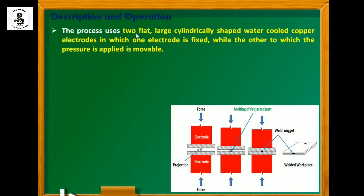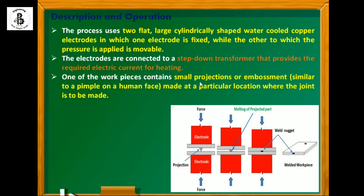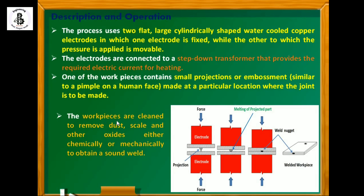The process uses two flat large cylindrical water-cooled copper electrodes, in which one electrode is fixed while the other is movable and applies pressure. You can easily adjust the two electrodes. The electrodes are connected to a step-down transformer that provides the required electric current for heating. AC power supply is used in this process. One of the workpieces contains small projections or embossements — similar to a pimple on a human face — made at particular locations where the joint is to be made. These are the predetermined points.